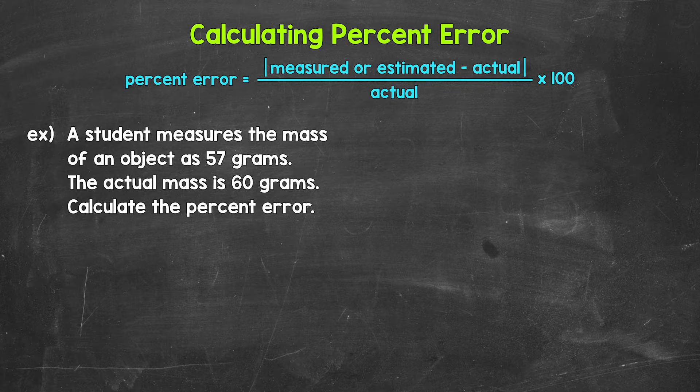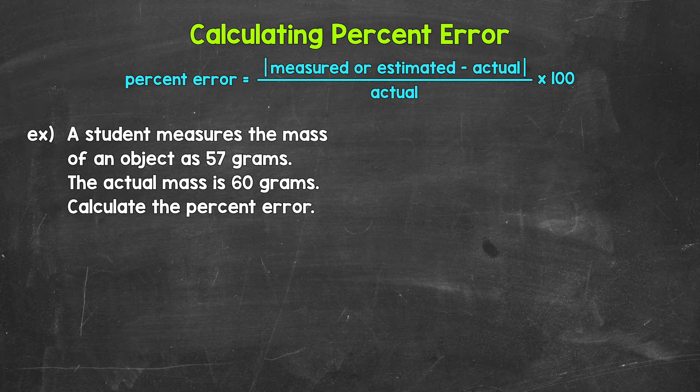Let's jump into our example where we have a student measures the mass of an object as 57 grams. The actual mass is 60 grams. Calculate the percent error.